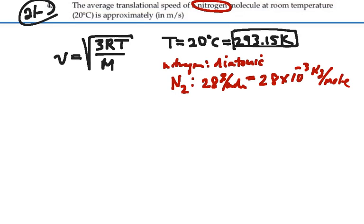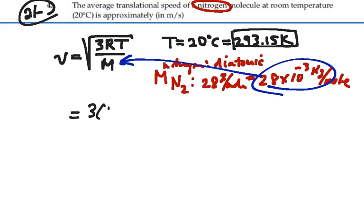So that is what we want to use in this equation for the molar mass of nitrogen. So that's going to be equal to 3 times 8.31 times the temperature, 293.15,